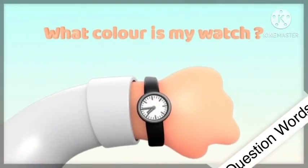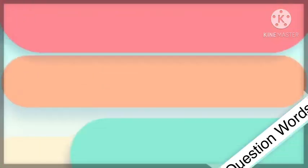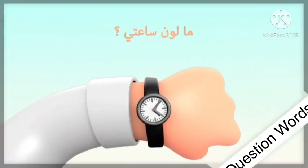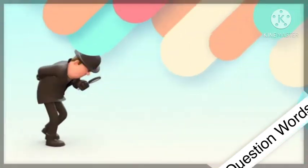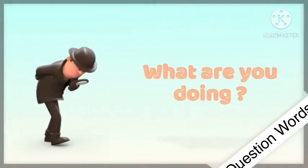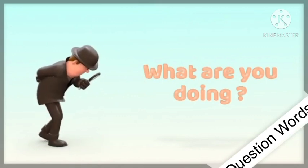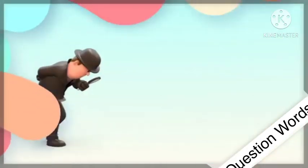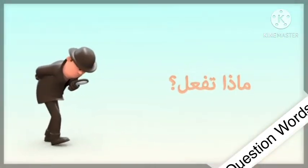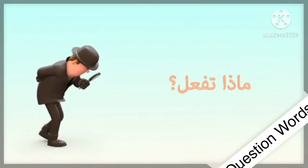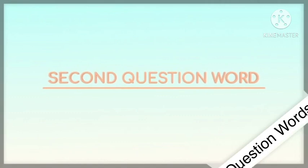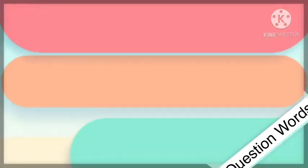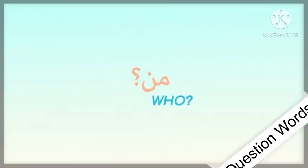The first example is: 'What color is my watch?' Here you can see there is no verb in the sentence, and in Arabic it is 'ma laun saati.' The next sentence is: 'What are you doing?' Here 'doing' is a verb, and in Arabic we have 'maza tafa'al' or 'maza yafa'al.'